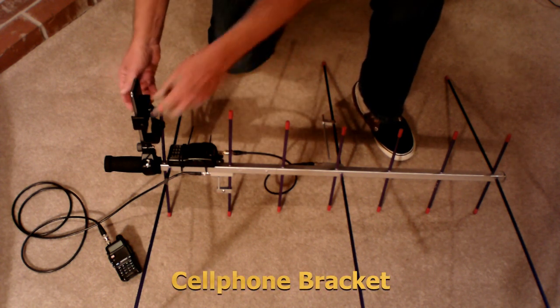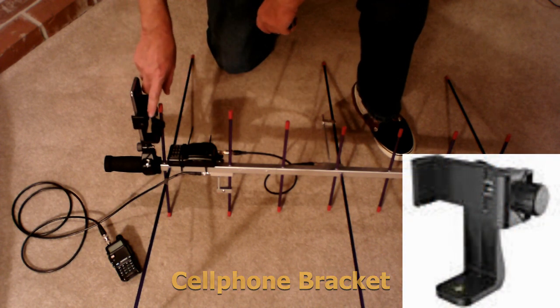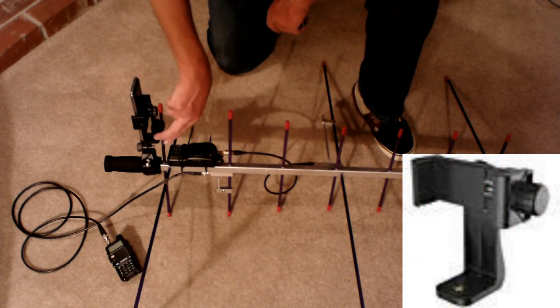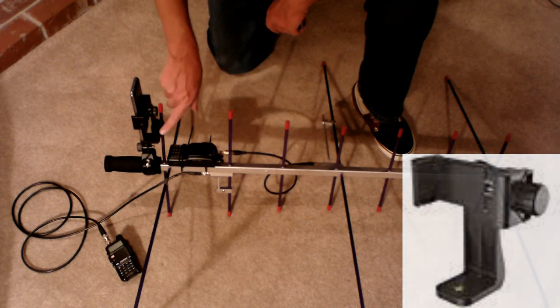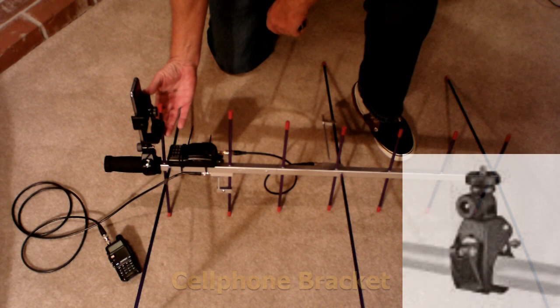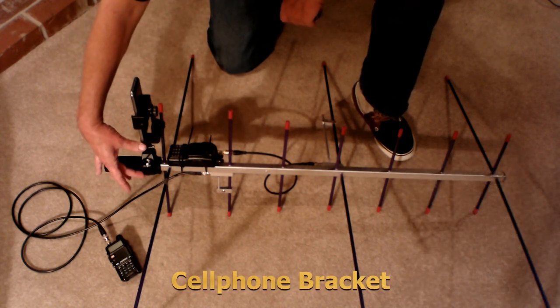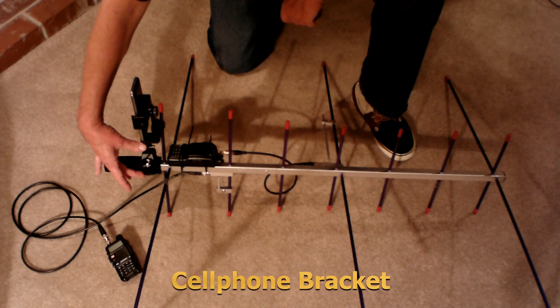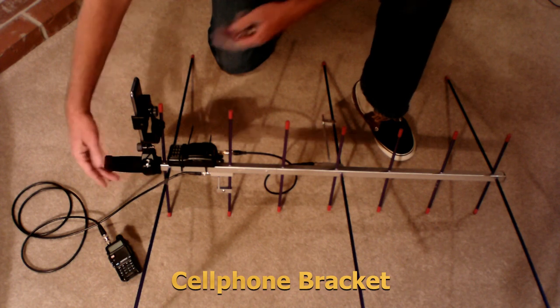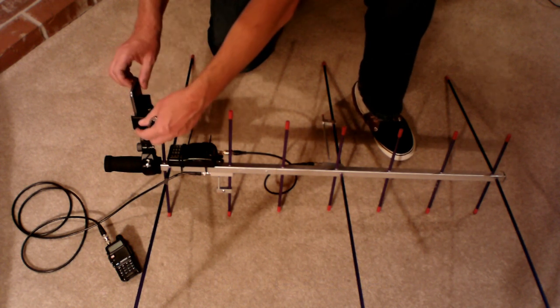Now, the next thing I want to point out is this little bracket I have here. Basically, this bracket consists of two components. You'll see that in the description section, where I'll show what each is. The top one is for a cell phone mount that you can put on a tripod, like a camera tripod. The bottom section here is to put a camera on a railing or something like that for photography. I put them together, and now I have a nice bracket for my cell phone.